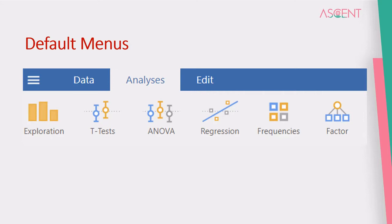The Analysis menu has exploration options for descriptive analysis and charts. There is a t-test group of tests, an ANOVA group, a regression group of tests, a frequency group of tests, and a factor analysis group of tests. Most new modules or analysis options that you install to Jamovi will appear to the right side of these.